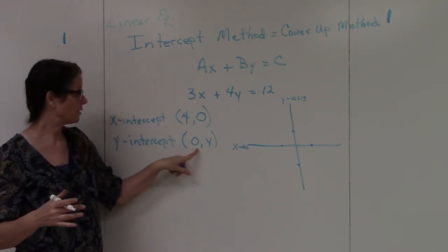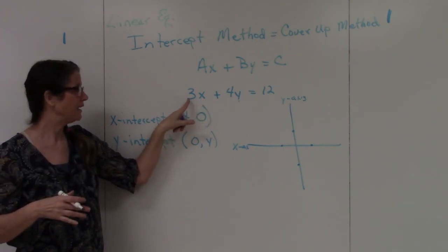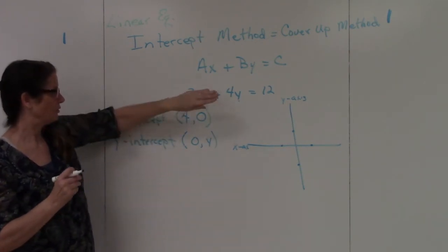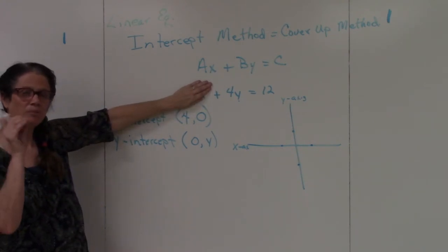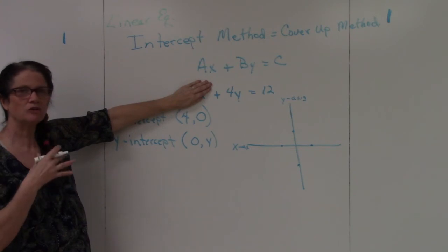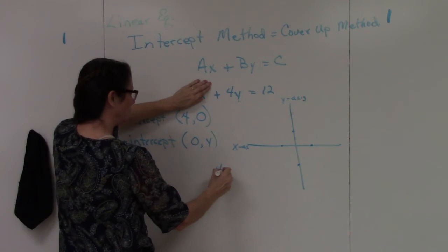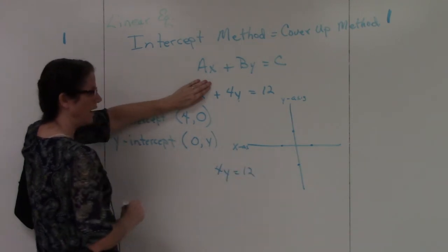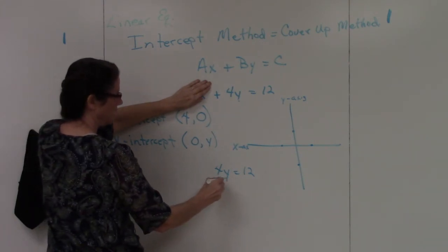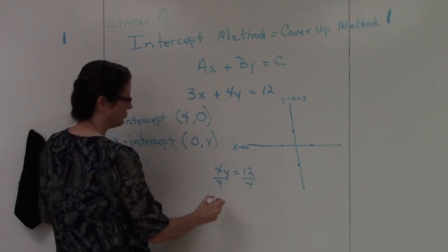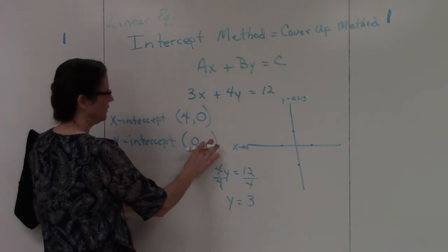It's the exact same concept: I replace my x with zero, get three times zero which is zero, so I can cover it up — it all goes away. What's left gives me my y value: 4y equals 12. Dividing both sides by 4, I get y equals 3. So my y-intercept is the point (0, 3).